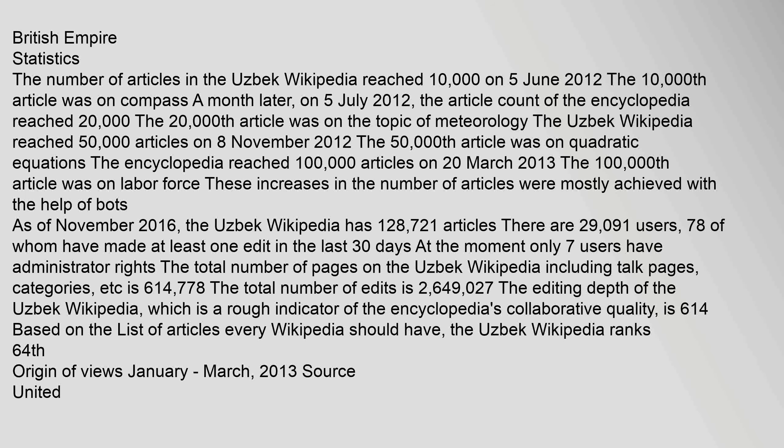A month later, on 5 July 2012, the article count reached 20,000 — the 20,000th article was on meteorology. The Uzbek Wikipedia reached 50,000 articles on 8 November 2012; the 50,000th article was on quadratic equations. The encyclopedia reached 100,000 articles on 20 March 2013; the 100,000th article was on labor force. These increases in the number of articles were mostly achieved with the help of bots.